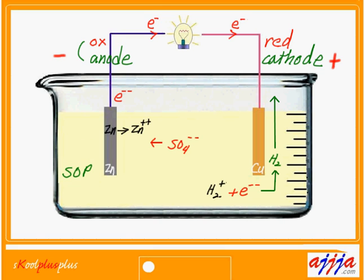I'm going to use standard oxidation potential. For zinc — all metals have potential — zinc has 0.76 volts. Copper has 0.34 volts, but this one is going to be negative. The absolute difference between these two potentials is 0.76 minus minus 0.34, which is 1.1. That's why we call E⁰ — the total potential — 1.1 volts.